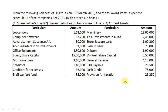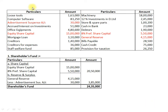First of all, we need classification of all the financial items and then we will work out our required calculations. From this financial data, we found Advertisement Suspense Account Rs.30,000, Equity Share Capital Rs.50,15,000, 8% Preference Share Capital Rs.5,50,000, and General Reserve Rs.4,15,000. These 4 items belong to Shareholders Fund.